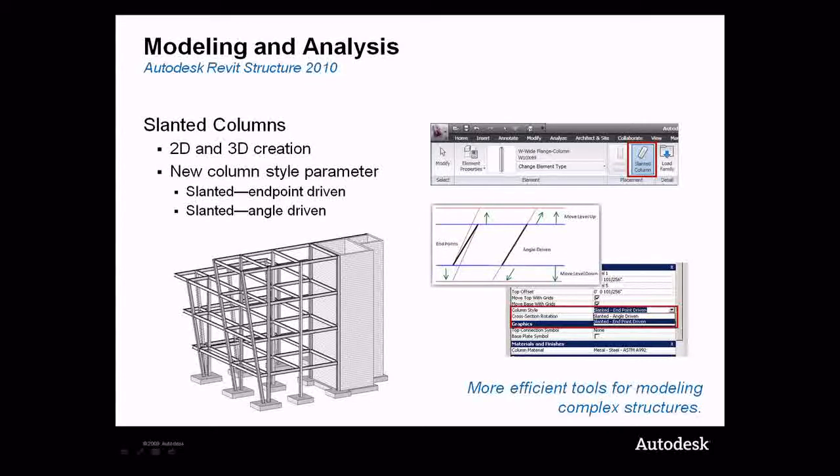The columns can be created in either 3D or in framing elevations. There is a new column style parameter that is applied to all slanted columns. By default, slanted columns are endpoint driven, which means if the column end offset is adjusted, the angle of the column will be modified to account for the new endpoint vertical location.